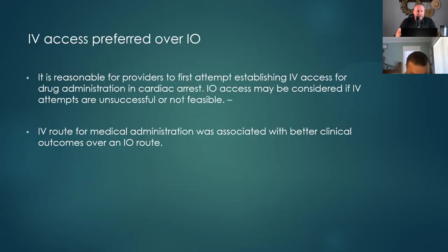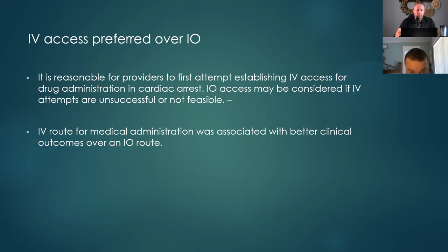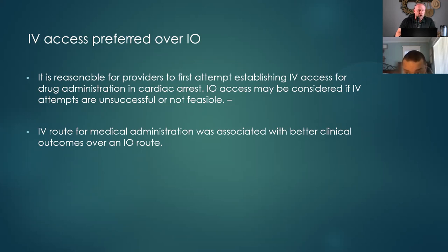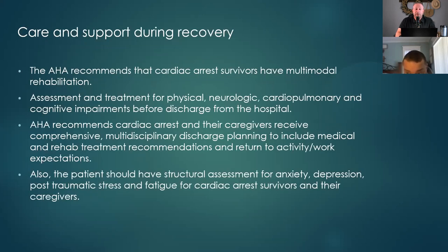IV access is preferred over IO in the field. When someone's in circulatory collapse, you just can't find a vein. In the field we used to drill right away and not even look for veins. But they're saying now to try and find an IV first. In cardiac arrest there's no blood pumping through the veins — it's almost impossible. In the hospital you have doctors that can do central lines, which is awesome.